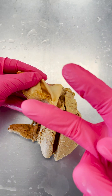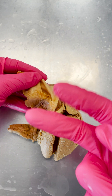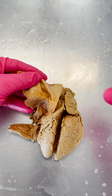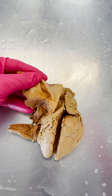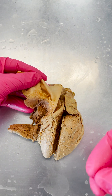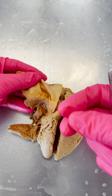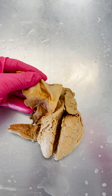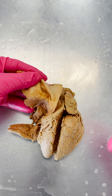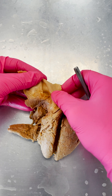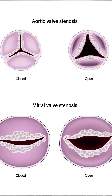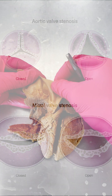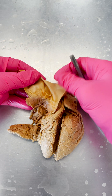There are two general conditions to think about with heart valve problems. Either the valve is leaky, which we call regurgitation, or it's too narrow or too stiff, which we call stenosis. You may have heard of aortic valve stenosis, mitral valve stenosis, or mitral regurgitation.